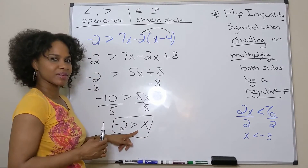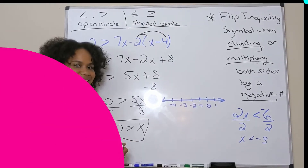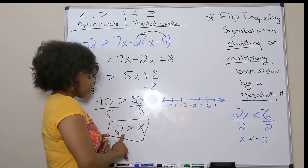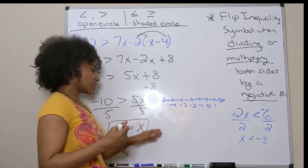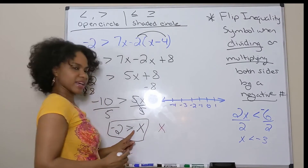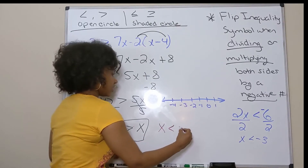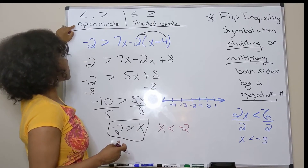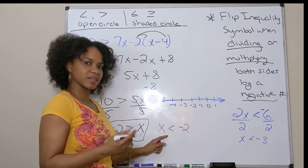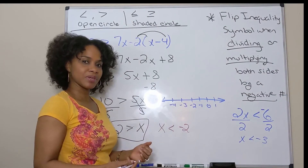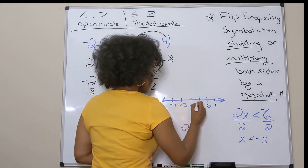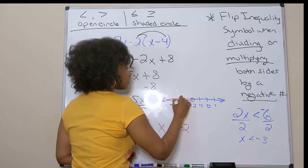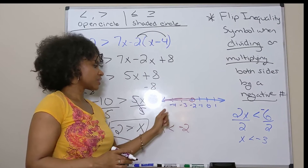Now let's graph this solution on a number line. I've drawn a small number line here. I read the solution as negative 2 is greater than x, or x is less than negative 2. So it's easier to flip it to see how we graph it — x is less than negative 2. I don't have an equal to sign underneath, so it's going to be an open circle, not shaded, because negative 2 will not be included in my answer. So I shade to the left, because these are all my values less than negative 2.